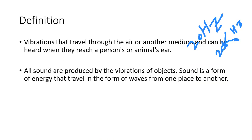Definition: Vibrations that travel through the air or other medium and can be heard when they reach a person or an animal. All sounds are produced by the vibration of objects. When something vibrates, sound is produced. Sound is a form of energy that travels in the form of waves from one place to another place.